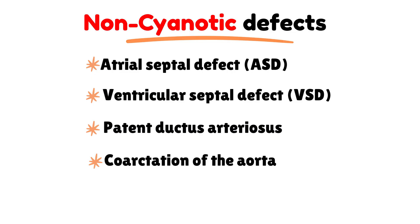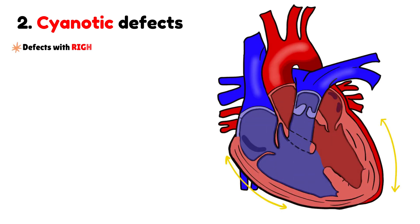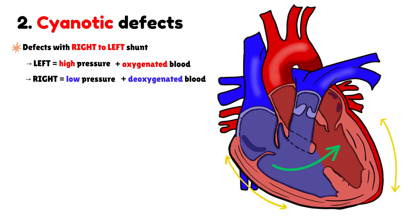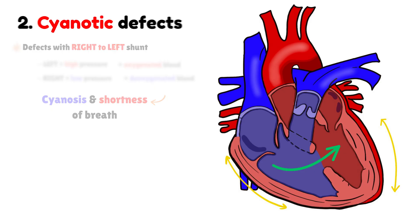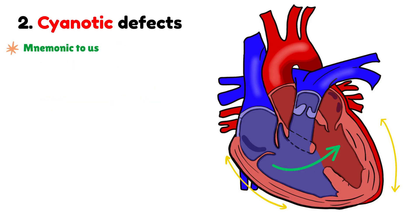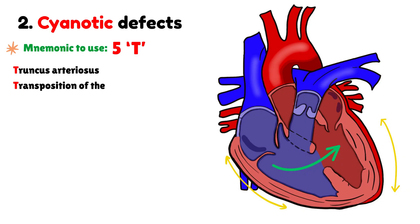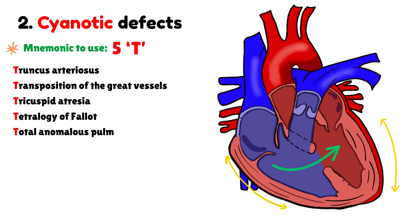Turning to the second group, we have the cyanotic congenital heart diseases. In these cases, deoxygenated blood from the right side of the heart directly enters the systemic circulation, producing cyanosis and shortness of breath. To remember these more easily, we often use the mnemonic the five T's, which stands for truncus arteriosus, transposition of the great vessels, tricuspid atresia, tetralogy of Fallot, and total anomalous pulmonary venous return.